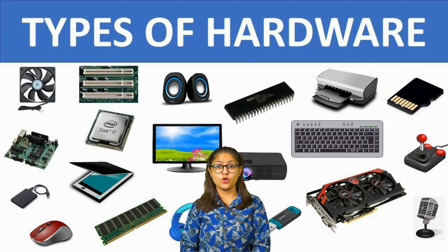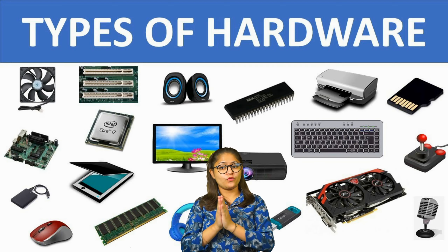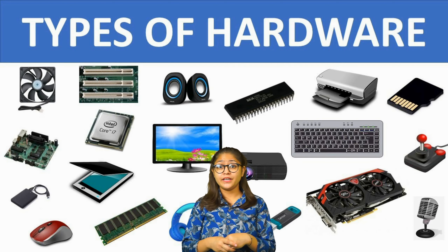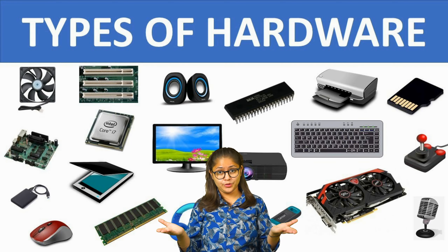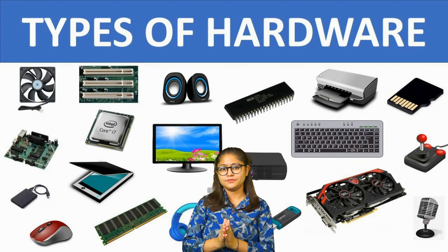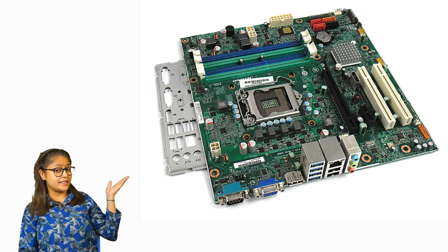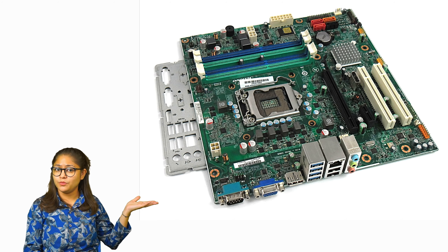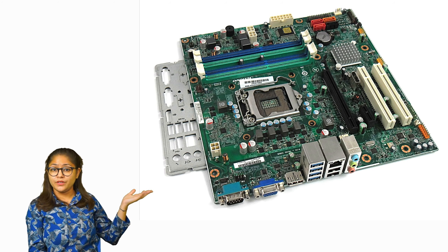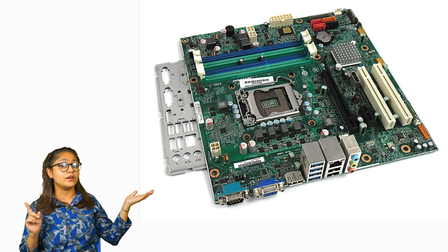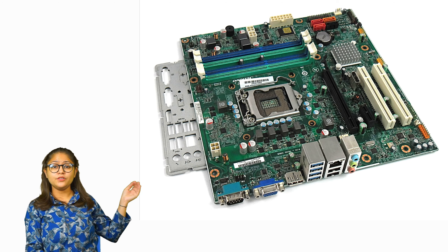Now let us talk about hardware. What are hardware? The parts of computer are known as hardware. We have learnt about the parts of computer in the previous class. We have the motherboard. What is a motherboard? It is the main circuit board of the computer. Without the motherboard, a computer cannot work. A motherboard is a very important part of the computer.